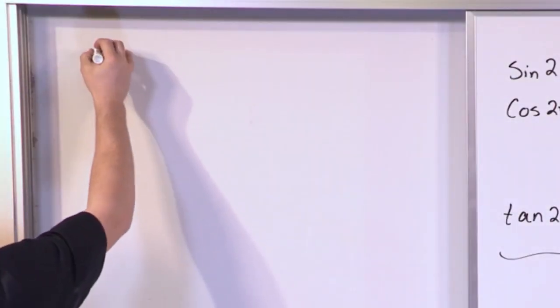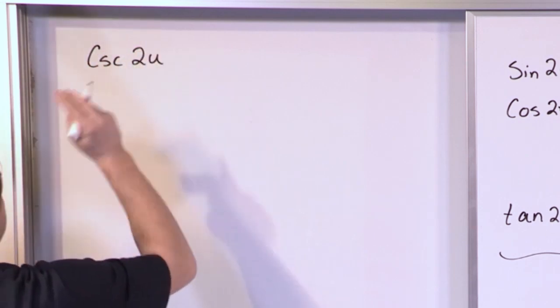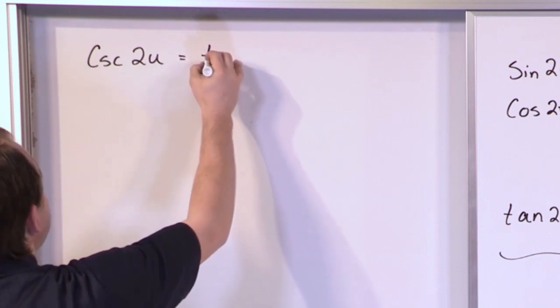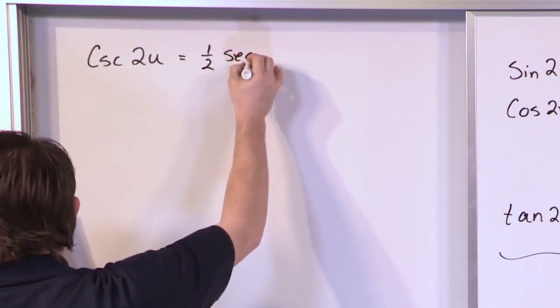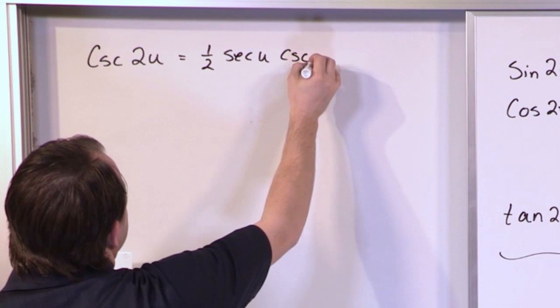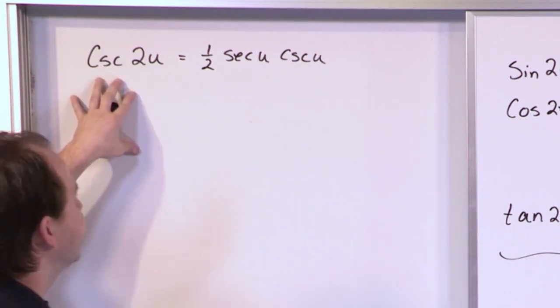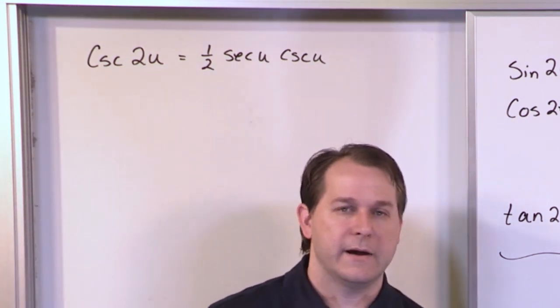Now what if you have cosecant of 2 times u? And you want to show that this is equal to 1 half secant u times cosecant u. Now the first thing you notice is we don't have any double angle formulas that deal with cosecant. So you're thinking, well, I'm in trouble.